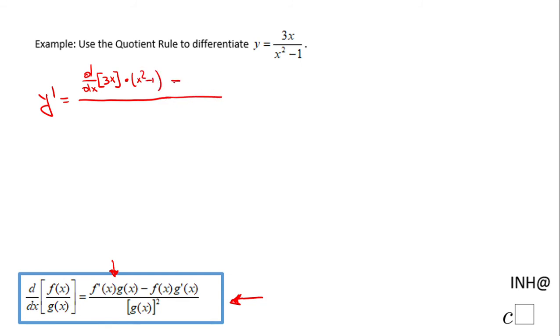And we have a minus, be careful. Let's move to the second part where we keep the first function f of x, the numerator, so 3x times the derivative of the denominator.